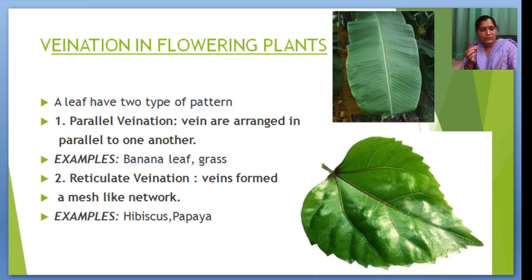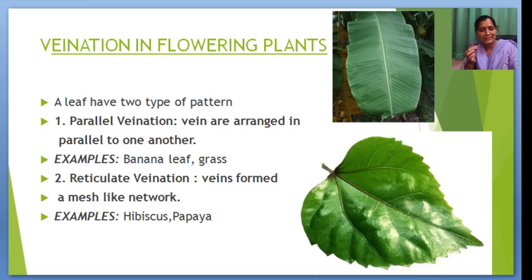Next is venation in garden plants. The leaves have two types of vein patterns. First is parallel venation — parallel venation means the veins are arranged parallel to one another; for example, the leaf of the naga trees. Second is reticulated venation — veins form a mesh-like network; for example, hibiscus and python.